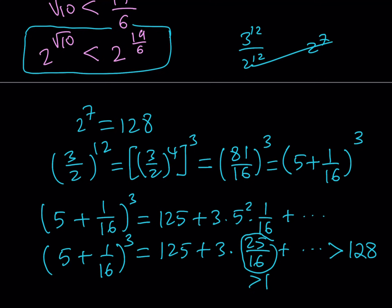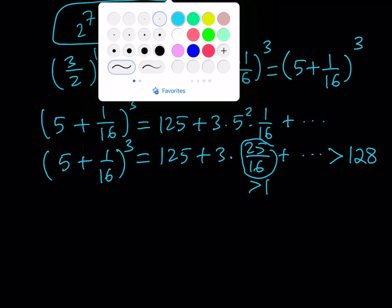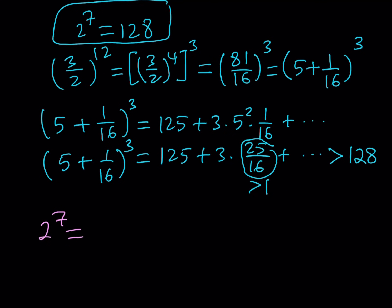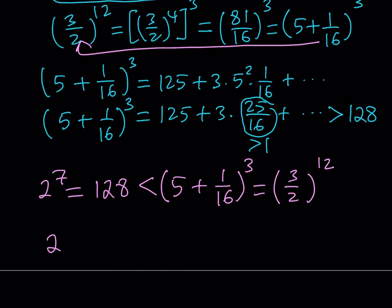So we can safely say that (5 + 1/16)^3 is greater than 128. We don't even need the last two terms because it's already greater than 128. Now, 2 to the power of 7 is 128. Let's put this all together. So 2 to the power of 7 equals 128, and we know that 128 is less than (5 + 1/16)^3 from the binomial theorem. And this expression is equal to 3 halves to the power of 12 from our earlier derivation. That means we can forget about everything in the middle and say: 2 to the power of 7 must be less than 3 halves to the power of 12.